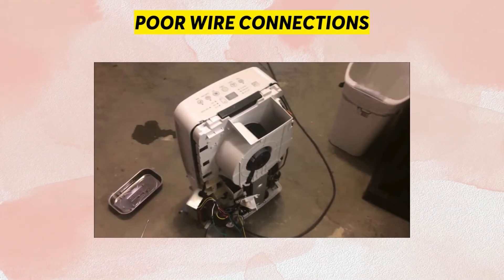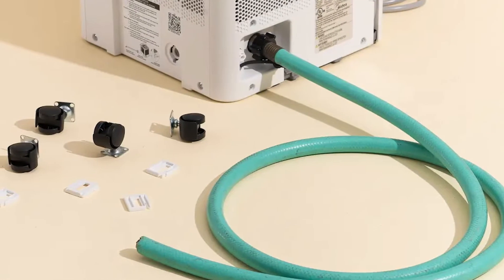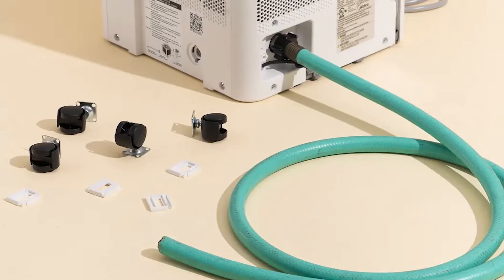Poor Wire Connections: If the wires are poorly connected or loose, the Error Code E9 can appear on the dehumidifier.